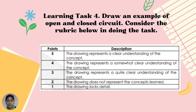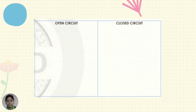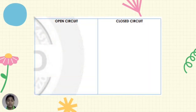Learning task number 4: Draw an example of an open and closed circuit. Consider the rubric below. Five points: the drawing represents a clear understanding of the concept. Four points: the drawing represents a somewhat clear understanding of the concept. Three points: the drawing represents a quite clear understanding of the concept. Two points: the drawing does not represent the concept learned. And one point: the drawing lacks detail. Put your drawing in the provided template.